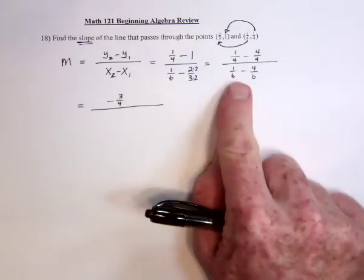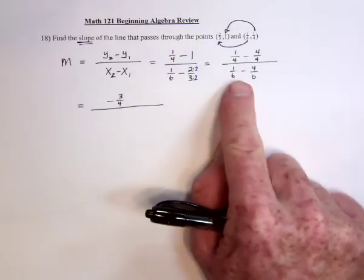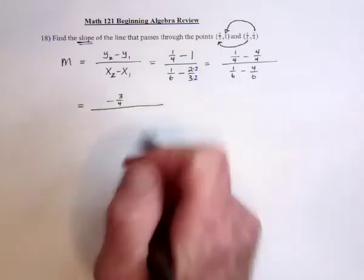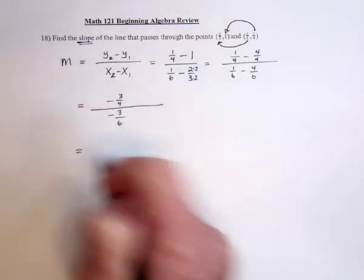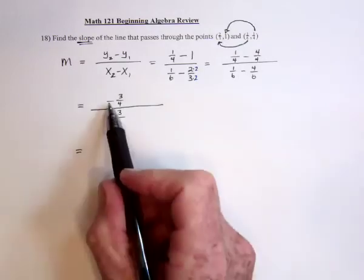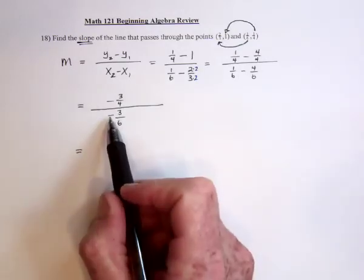Alright, now I need to finish up this. So 1 sixth minus 4 sixths is going to be negative 3 sixths. And then for one thing, a negative divided by negative is positive, those are going to cancel.